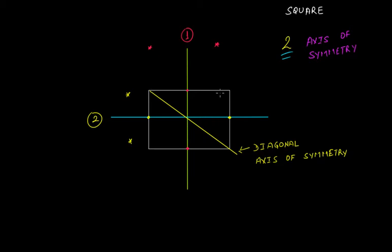Because if you try to fold this square around this diagonal line, this portion folds onto this portion, and these two equal halves will exactly overlap with each other. That is, this vertex and this vertex on being folded will come to a single point and overlap. This side and this side will overlap, and this side and this side will overlap. So these two equal halves are mirror images of each other, and therefore this diagonal will be another axis of symmetry.